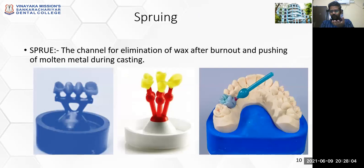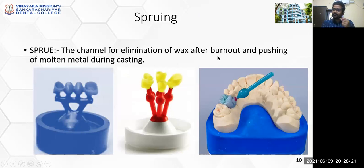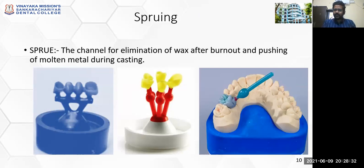Once the wax pattern is ready, the next step is sprueing. Sprueing is the technique of placing the sprue to the wax pattern that you fabricated. A sprue is the channel for elimination of wax after burnout and also provides a pathway for the molten metal during casting. This is your wax pattern for a full metal crown — once this wax pattern is done, you attach a rod-like wax piece to it.